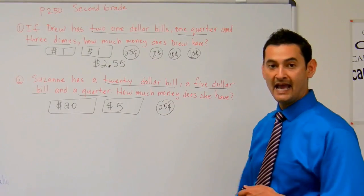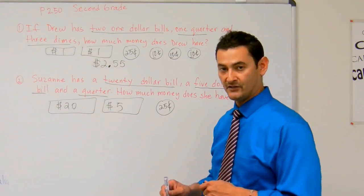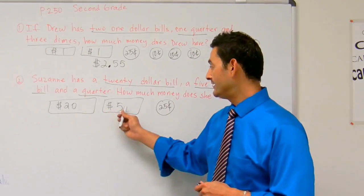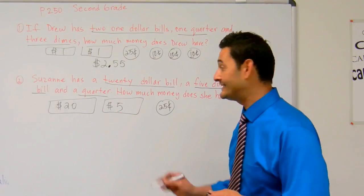How much money does she have? So first, let's go ahead and work on the dollar bills. So twenty, plus five more, that's going to be twenty-five.